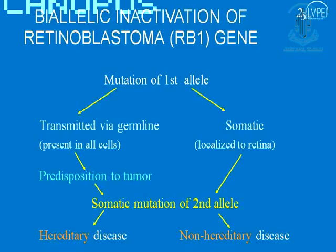On the other hand, if you have mutations of the first as well as the second allele both in the retina itself — what we call somatic mutations — then you have non-hereditary disease.